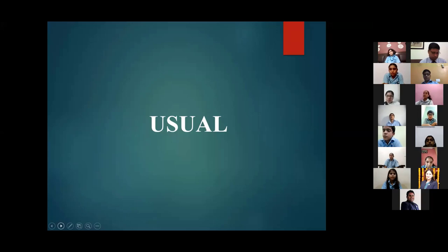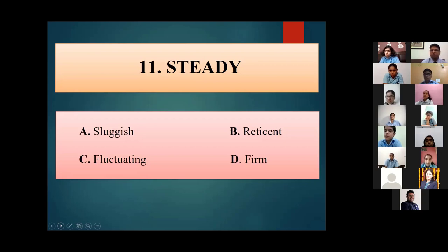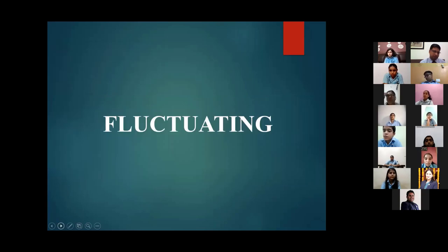Next word for Sanvi: 'Steady'. Options include sluggish, decent, fluctuating or firm. She answers 'C, fluctuating' — correct, absolutely correct.